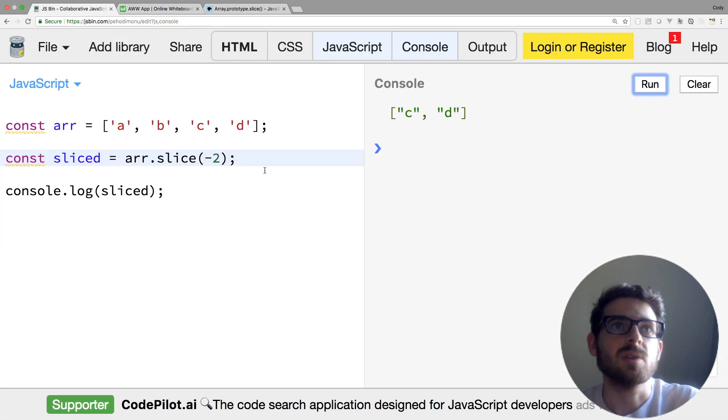Slice of one comma three should give us the subarray of BC. Let's go to JS bin and visualize that. So one comma three, I run that, we get back the subarray of BC.